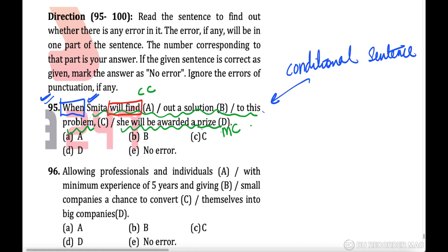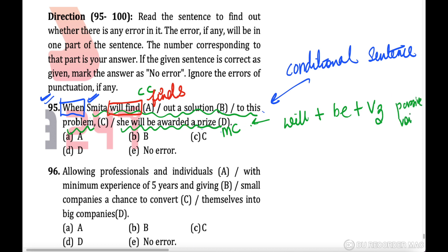So the correct form is: 'When Smita finds out a solution to this problem, she will be awarded a prize.' Here 'will be awarded' uses will + be + V3 because this part is in passive voice — the doer is not given. So Part A is erroneous; the answer is option A.